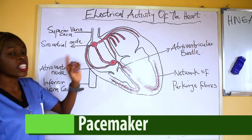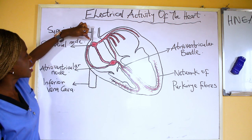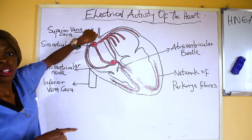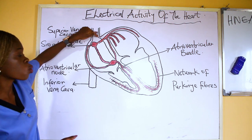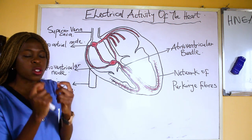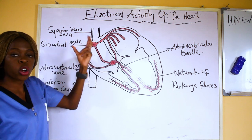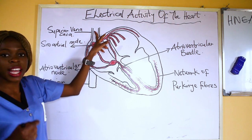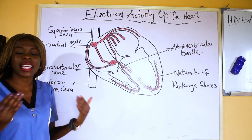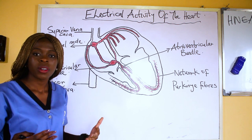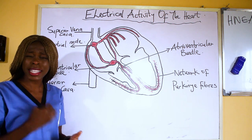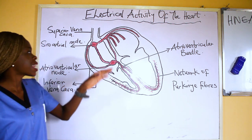This pacemaker is located in the atrium, close to the superior vena cava. When describing the electrical activity of the heart, you must note that the sinoatrial node is located in the atrium close to the superior vena cava. The sinoatrial node is also known as the pacemaker because it is always excited and unstable, and it generates these impulses at a rate of 60 to 80 beats per minute.